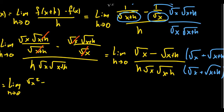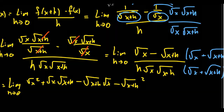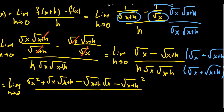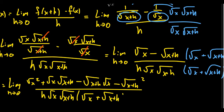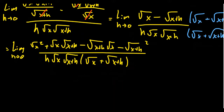The first term gives square root of x times square root of x. Then we get plus the square root of x times the square root of x plus h. Next, minus the square root of x plus h times the square root of x. And lastly, minus the square root of x plus h squared. This all sits above h times the square root of x times the square root of x plus h times the square root of x plus the square root of x plus h. Do not multiply out the denominator — simplify the numerator. That's the goal right now.